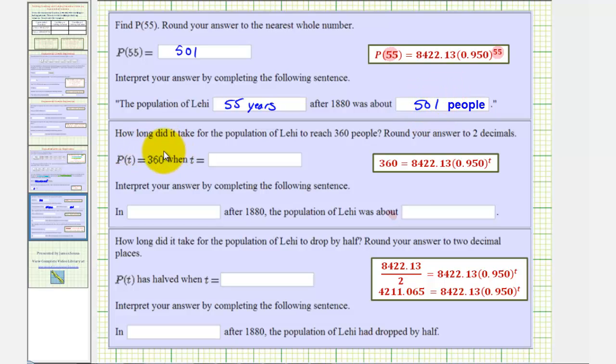Next we're asked to determine how long it will take the population of Lehi to reach 360 people, and round to two decimal places. Which means we want to find the value of t when p of t is equal to 360. To set up the equation for this, we substitute 360 for p of t, giving us this equation here.